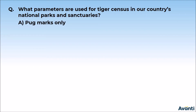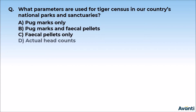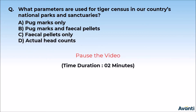Option A: Pug marks only. Option B: Pug marks and fecal pellets. Option C: Fecal pellets only. Option D: Actual Head Counts. We will pause the video here.